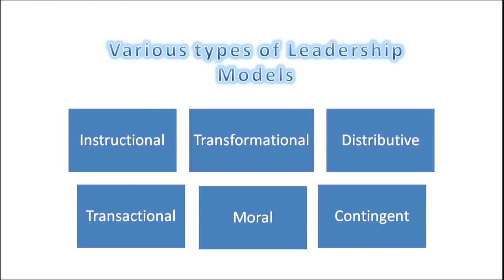In the Instructional Leadership Model, which deals with instructions, academics, work and culture of employees; Transformational focuses on transforming subordinates from good to better; Distributive shows how members share responsibilities and duties and participate in the functioning of the organization; Transactional deals with short-term goals; Moral deals with good conduct; and Contingent deals with adjustment and cooperative functioning to tackle situations.